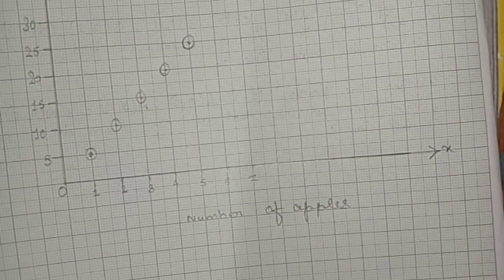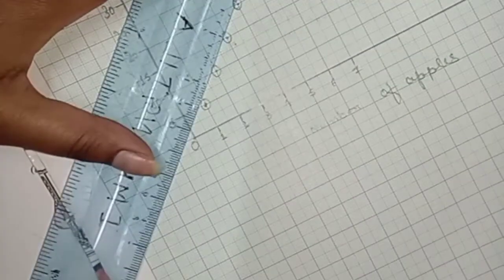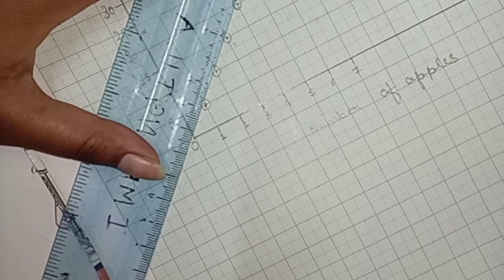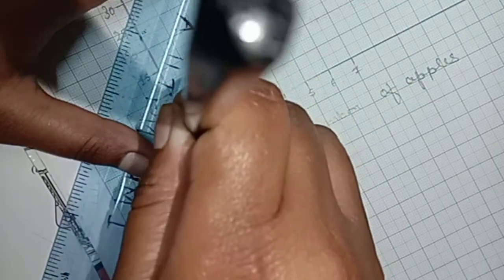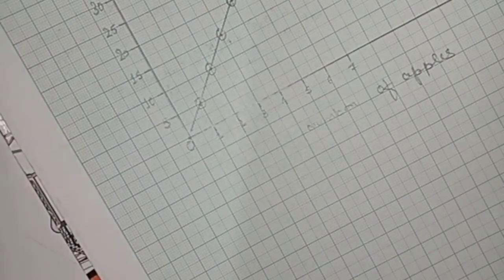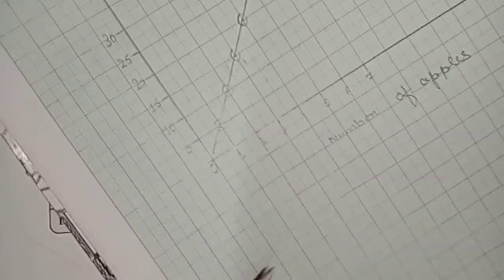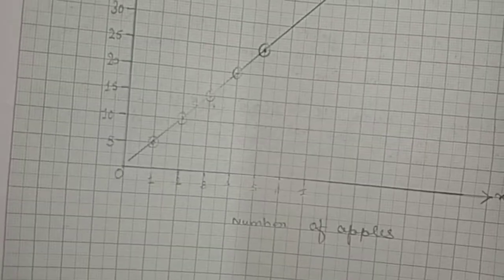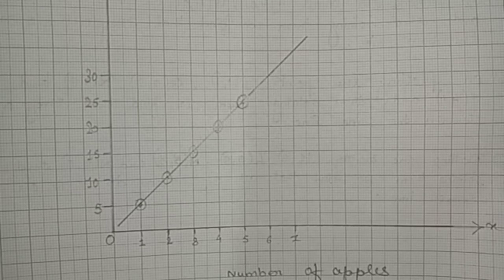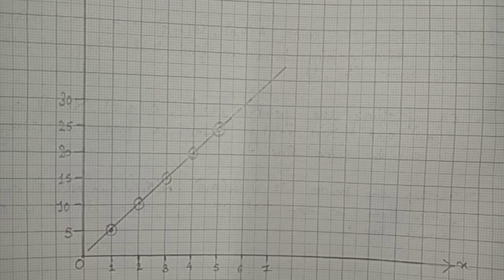These are the points. Now we will join all the points together. You can see it is a straight line we obtain. This is solution number a from question number 1. I hope all of you understand. If there is any queries or doubt, please ask.